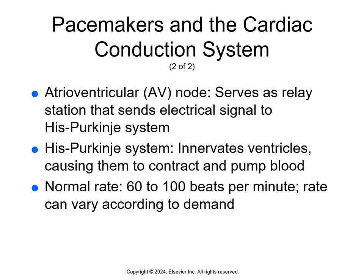The AV node is a relay station that sends electrical signals to the His-Purkinje system, which innervates the ventricles, causing them to contract and pump blood out to either the lungs or the body. Normal rate is 60 to 100 beats per minute, and the rate varies based on the body's needs — faster when running, slower when sleeping. If both the SA and AV nodes don't work, the ventricular muscle cells become the third pacemaker, producing a very slow heart rate of 20 to 40 beats per minute.